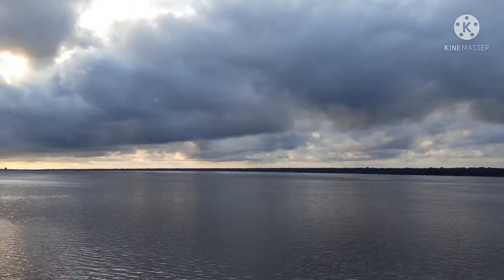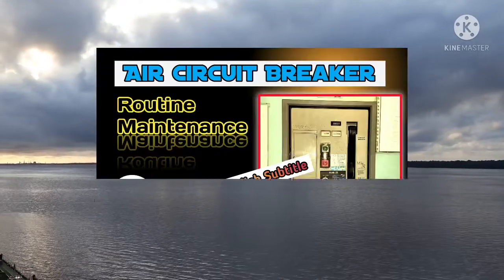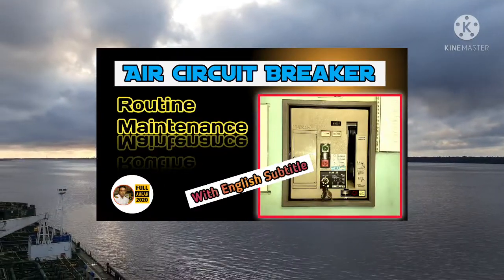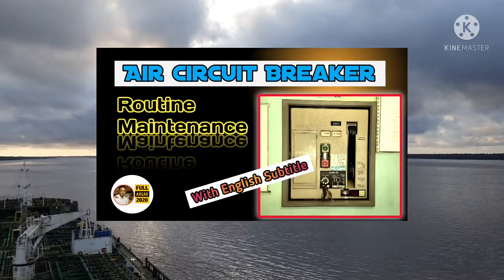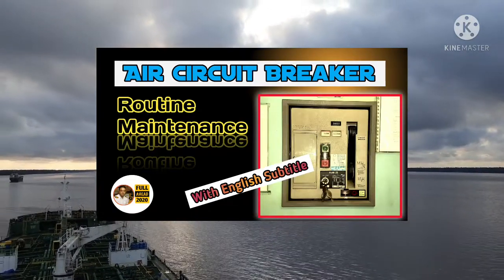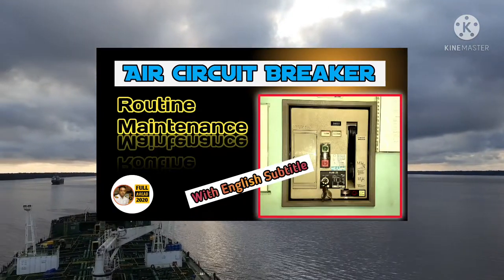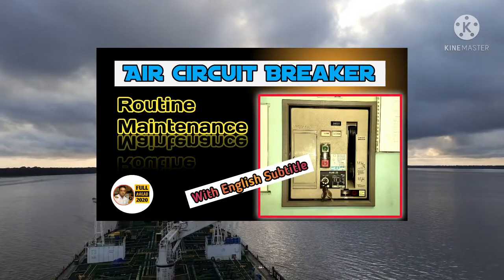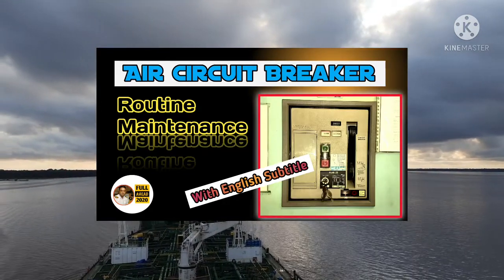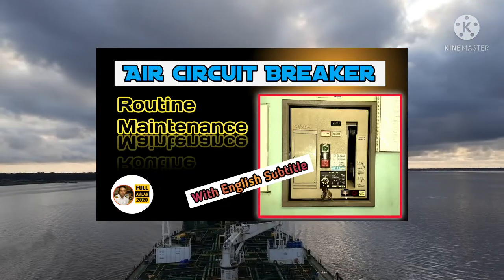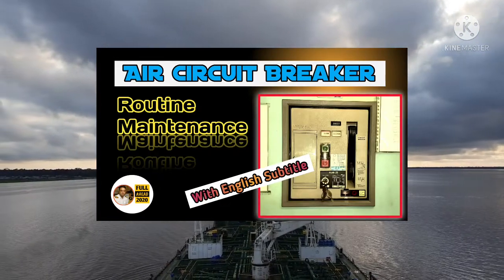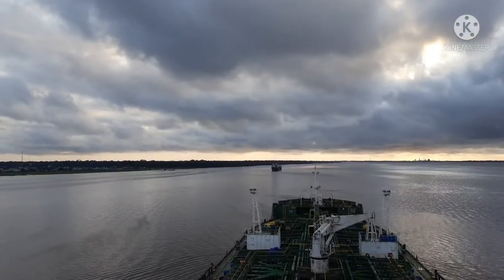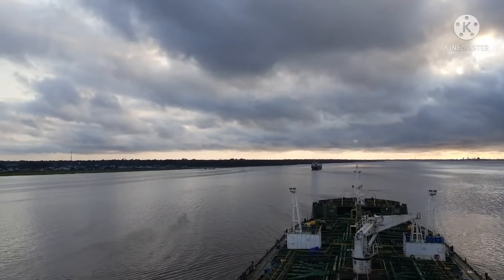Assalamualaikum. Today our learning topic is Routine Maintenance of Air Circuit Breaker — Air Circuit Breaker, in short ACB. We can find it in the Main Busbar in ECR. Every 4 to 6 months, ACB routine maintenance should be done. The main responsibility of this job is on the ETO, but every engineer should know about this job. Let's begin.